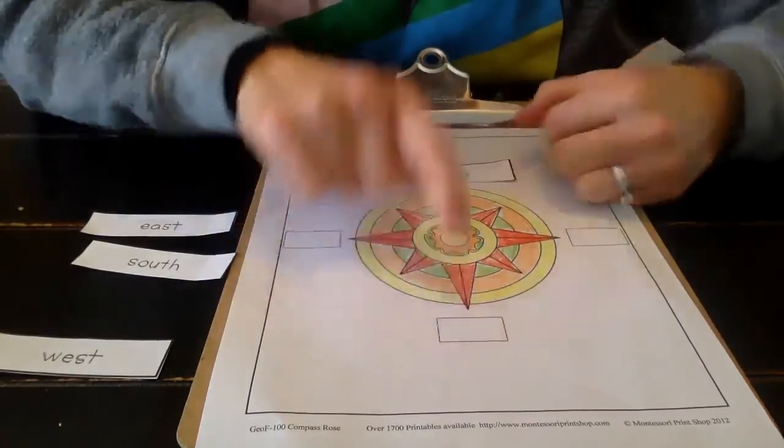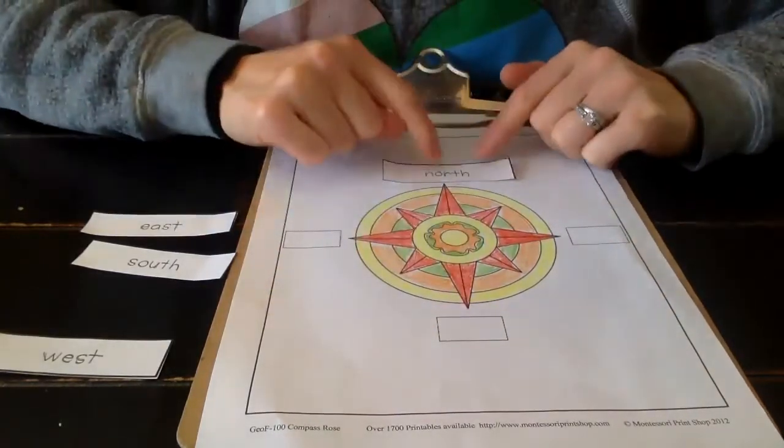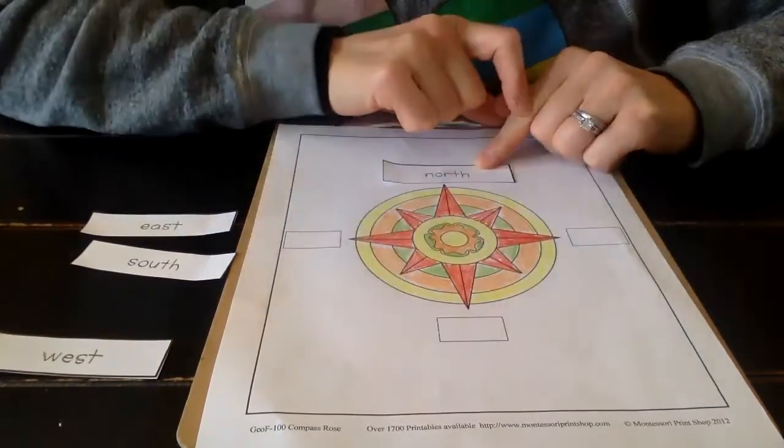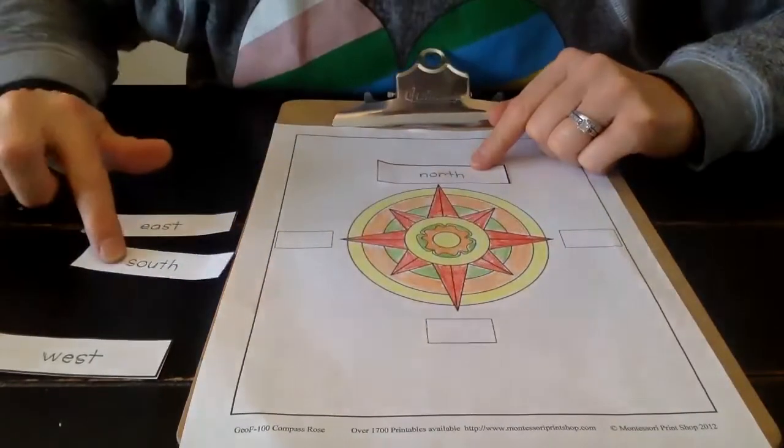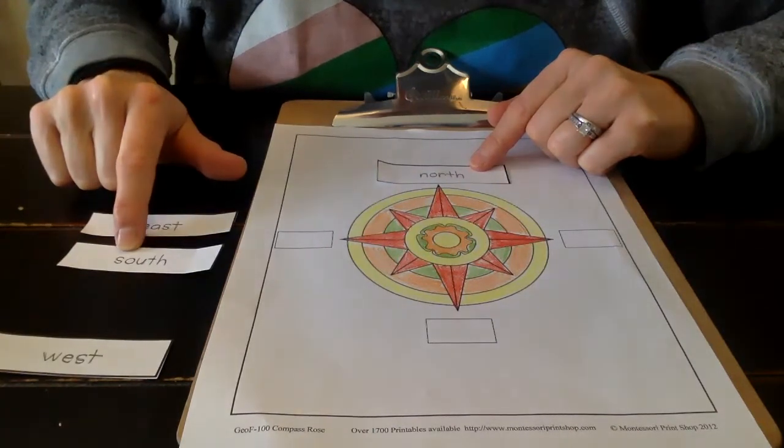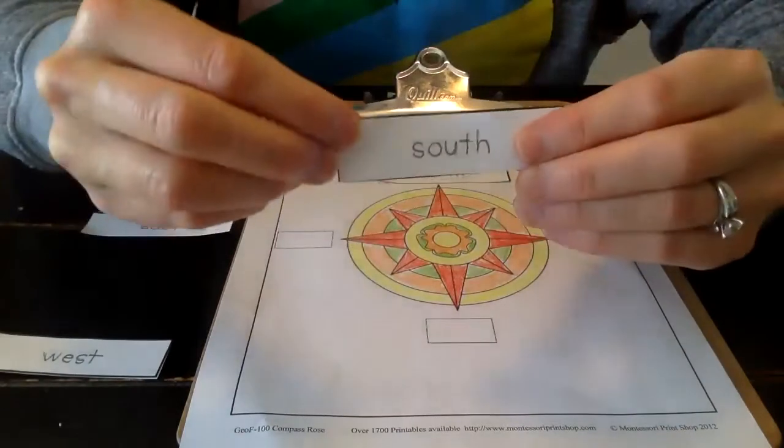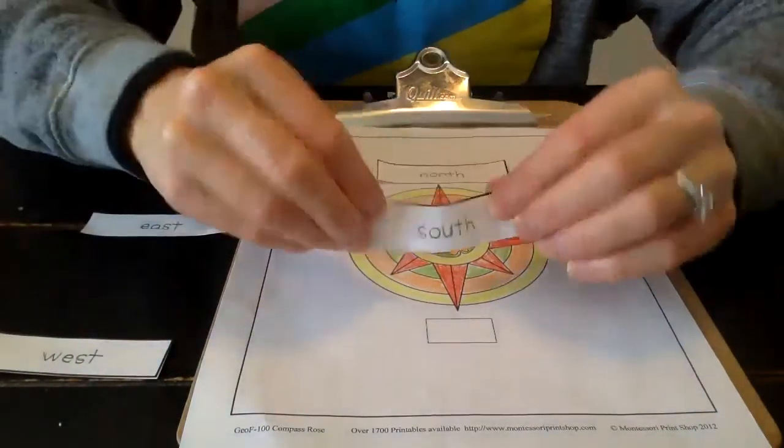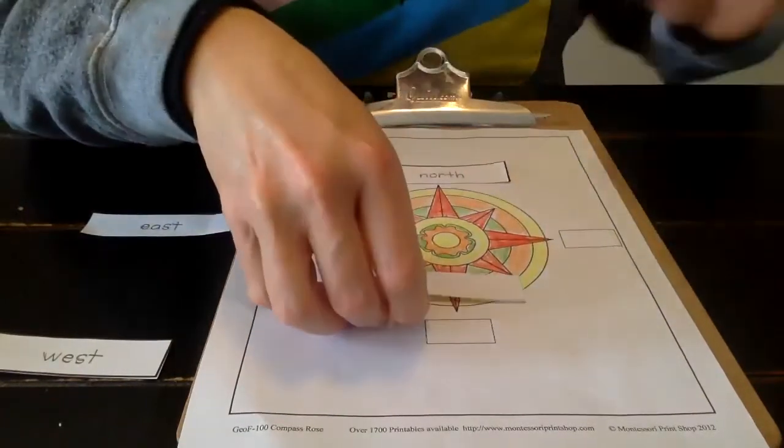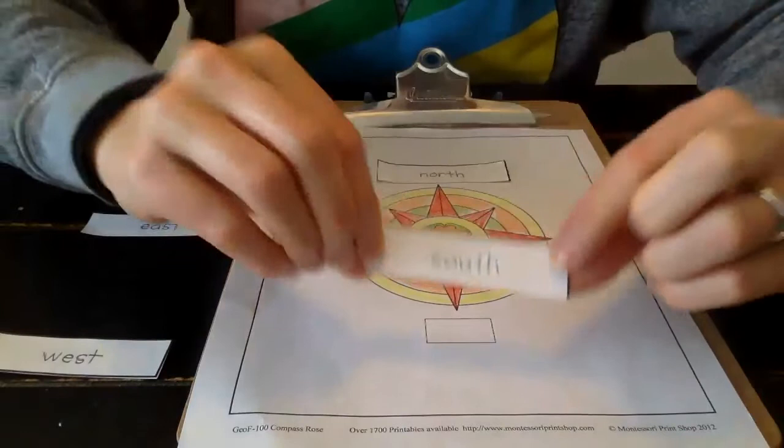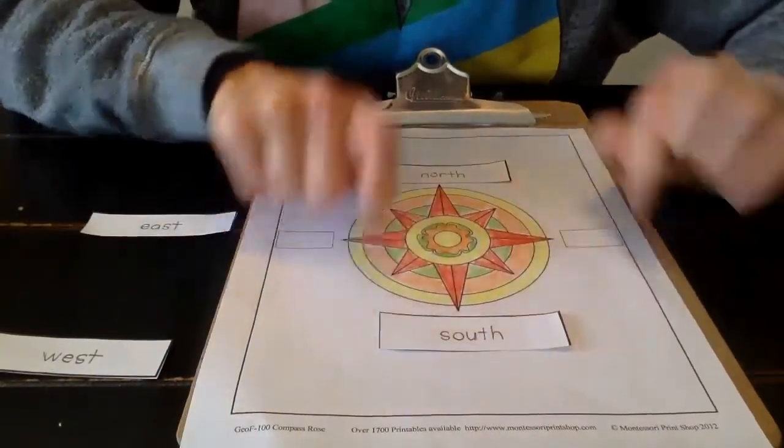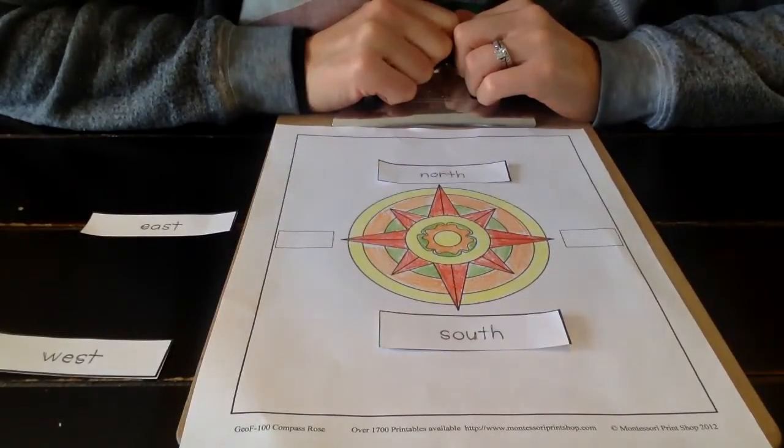The other side of north, when I have north this way, behind north is south. So at the bottom, I'm going to find my south label. South. Here we go. South is here. I'm going to put him on the bottom because when we look at a map, the bottom of the map is south.